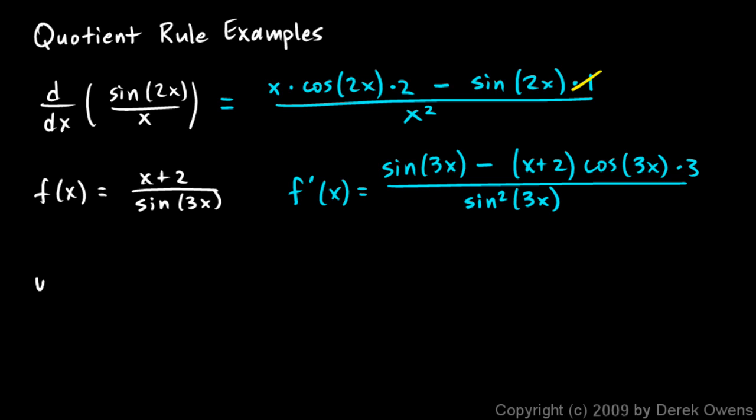Okay, another example. y is equal to 7x minus 2 over 3x plus 4. Now, when they're simple polynomials like this, both of the functions, they often simplify very nicely, and we'll see that in this case. So let's find y primed, the derivative.